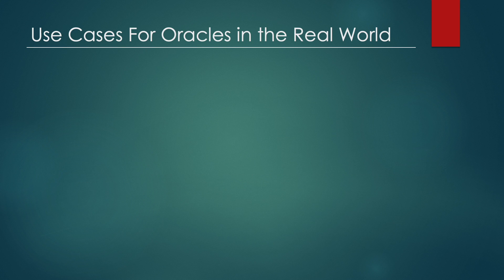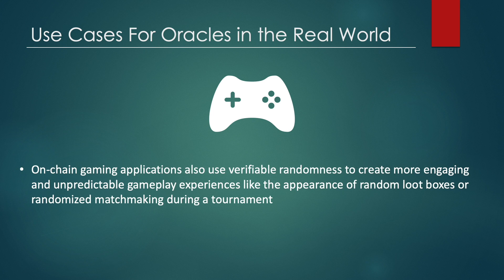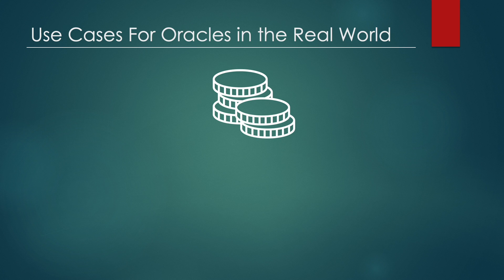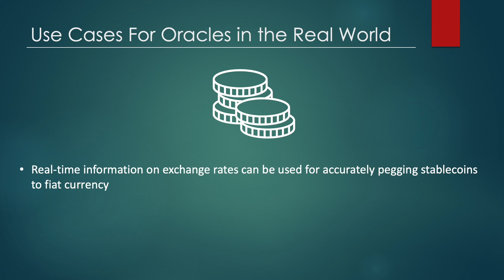In addition, oracles can be used in gaming. On-chain gaming applications use verifiable randomness to create more engaging and unpredictable gameplay experiences, such as the appearance of random loot boxes or randomized matchmaking during a tournament — and this can be done using oracles. A final example is how oracles can be used in the maintenance of stablecoins: real-time information on exchange rates can be used for accurately pegging stablecoins to fiat currency.